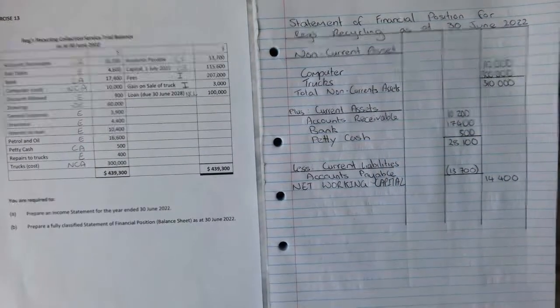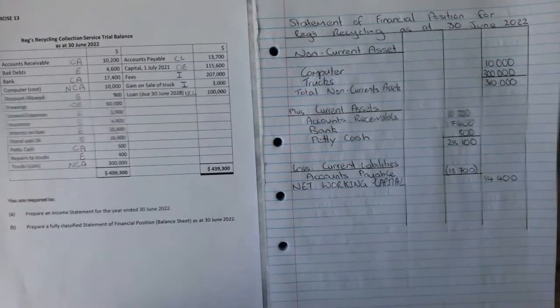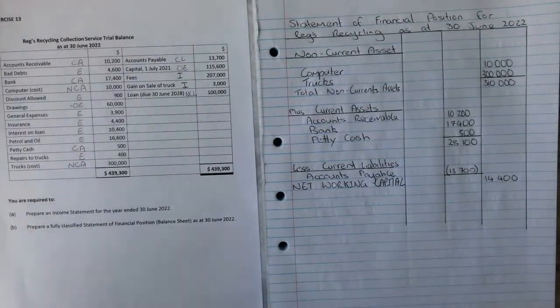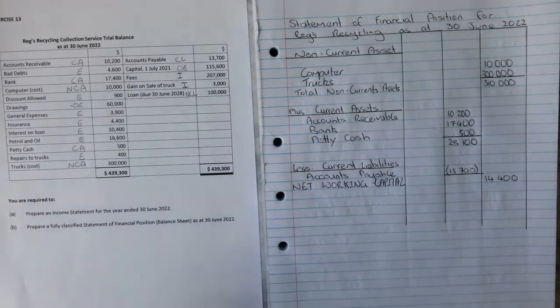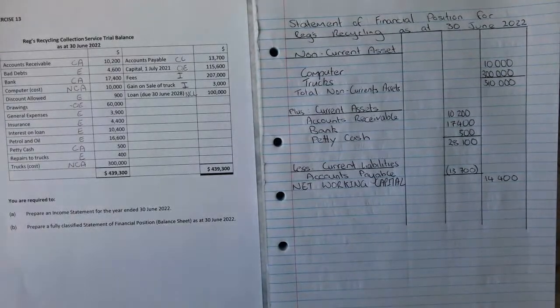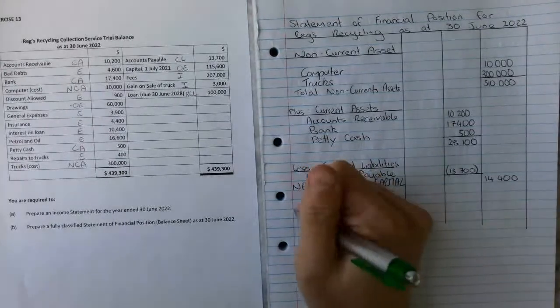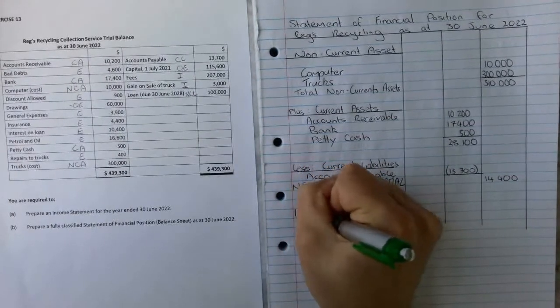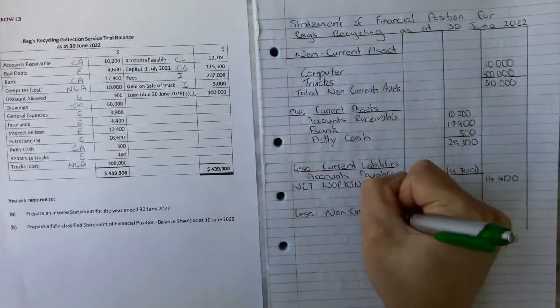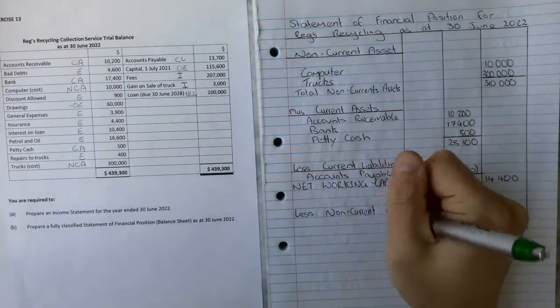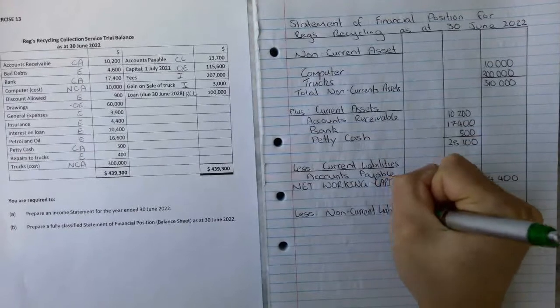We're going to call that net working capital. That shows us what our net working capital is and that will help us later on when we get into the financial analysis and looking at percentages and ratios around it. The final step of the top part is less non-current liabilities. These are ones we're not going to pay off in a year.